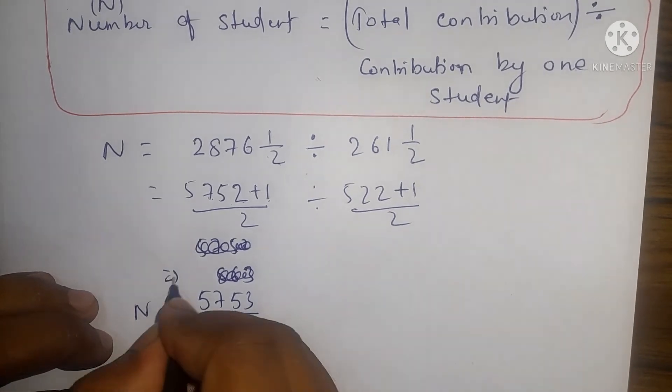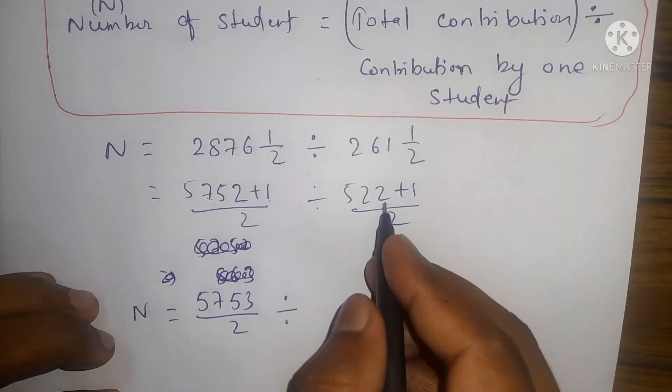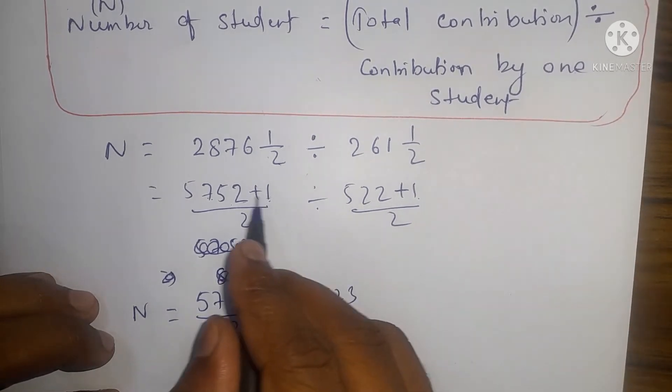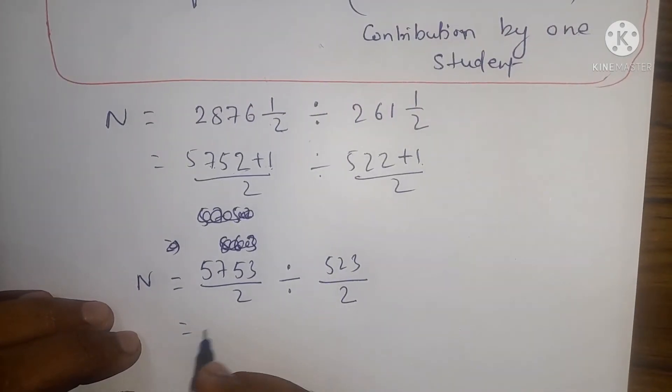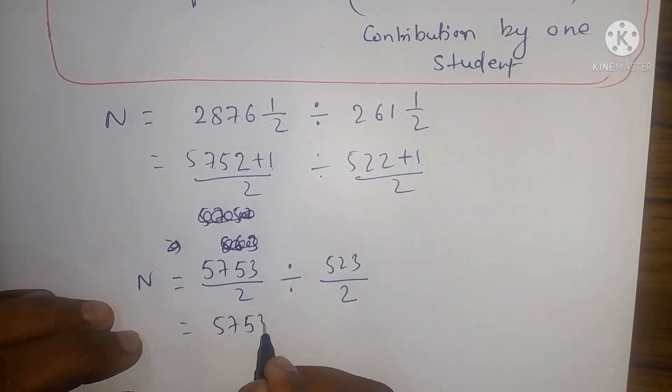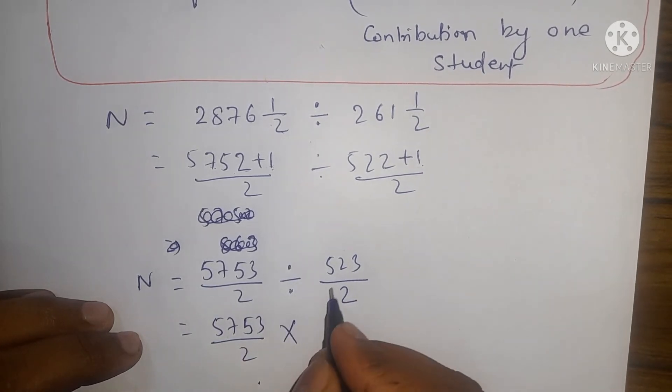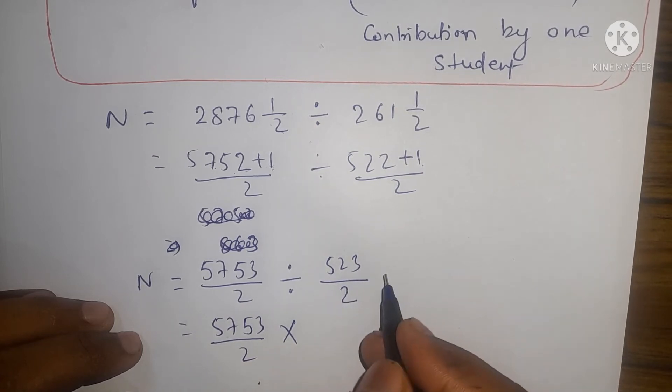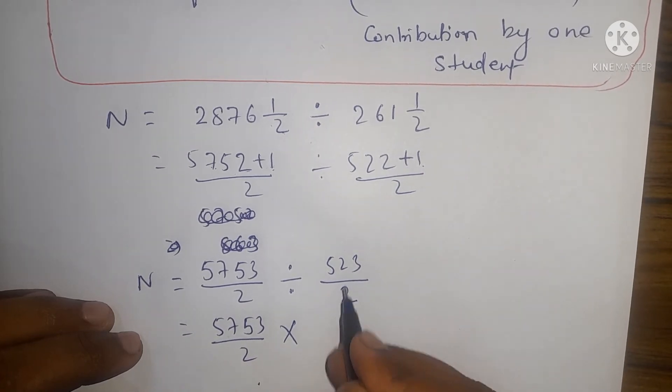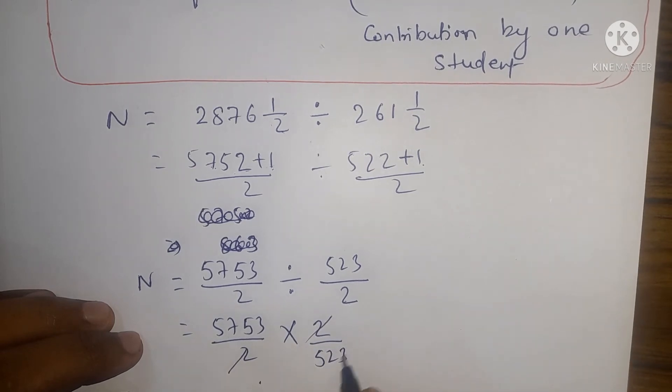And divide by - 522 then 523. We need to add everything. Then 2, see 5753 by 2. Now to solve this, what do you do? You multiply. When you multiply, you reciprocate - whatever is below goes up, whatever is up goes below. Write 2 here, and this is up, then write below. 2 and 2 cancel.